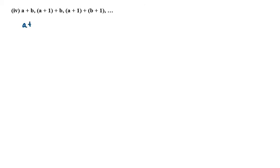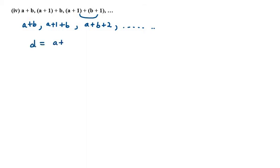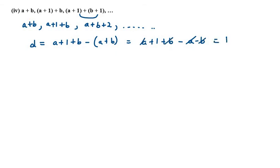Moving on to the fourth part. We are given with (a+b) as the first term, then (a+1+b) as the second term, (a+b+2) as the third term — because 1+1 is 2, and so on. We need to find the difference between the first two terms: (a+1+b) minus (a+b). Expanding brackets we get a+1+b minus a minus b. A and a cancel out, so we are left with 1.